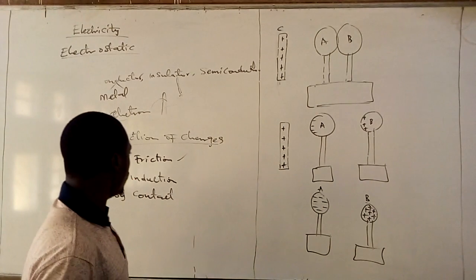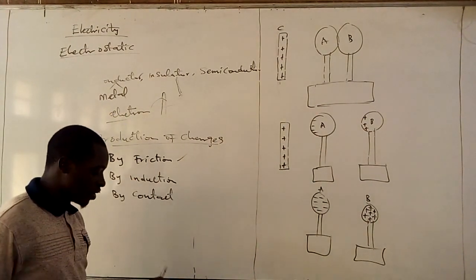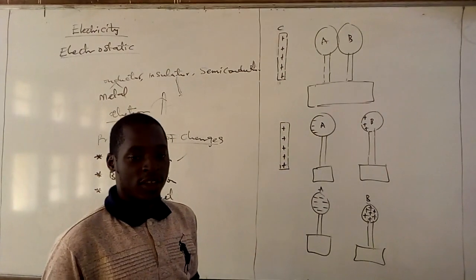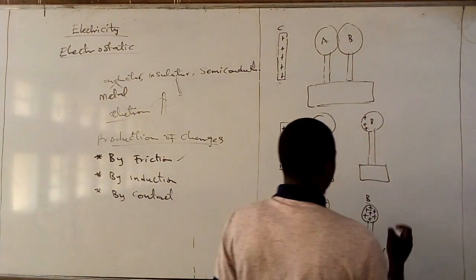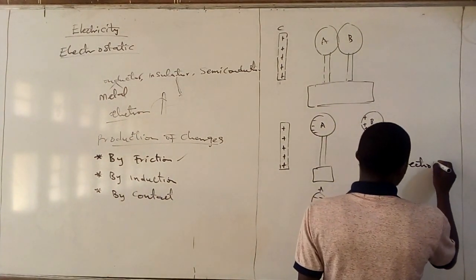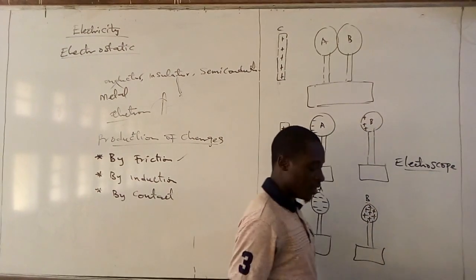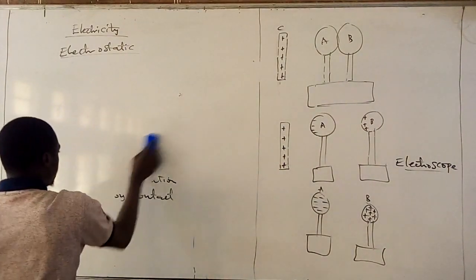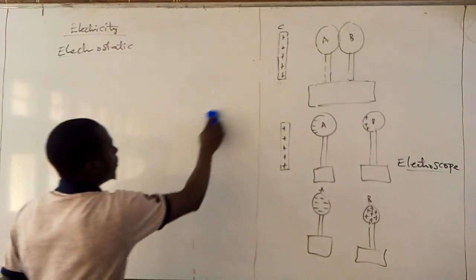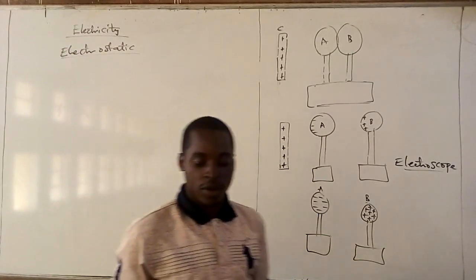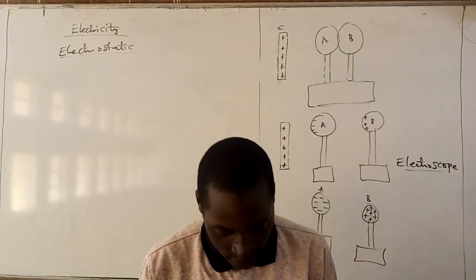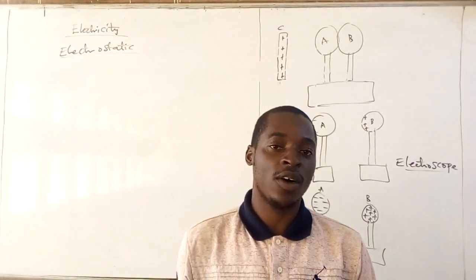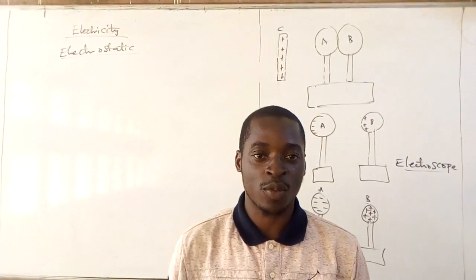We now understand that we can produce charges by induction, by friction, and by contact. If we want to detect a charge, there is a material we normally use called an electroscope, which we use to detect charge in a body. This will be the end for electrostatics. We are still going to continue. Please like our video and share it as much as you can. Thank you.